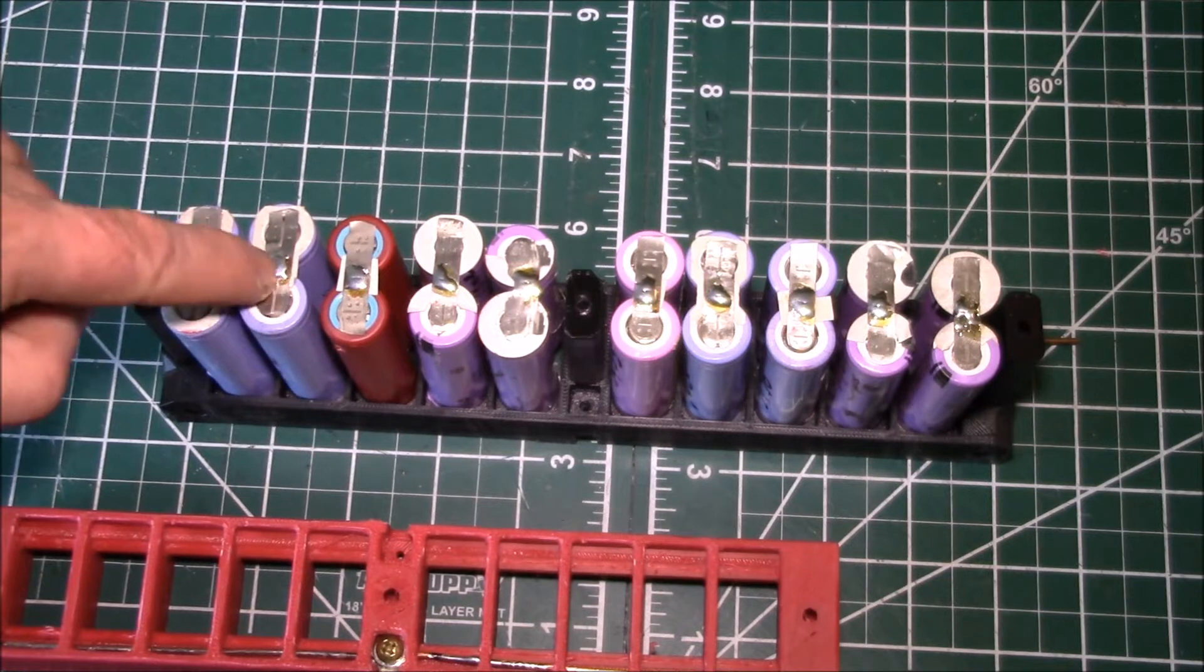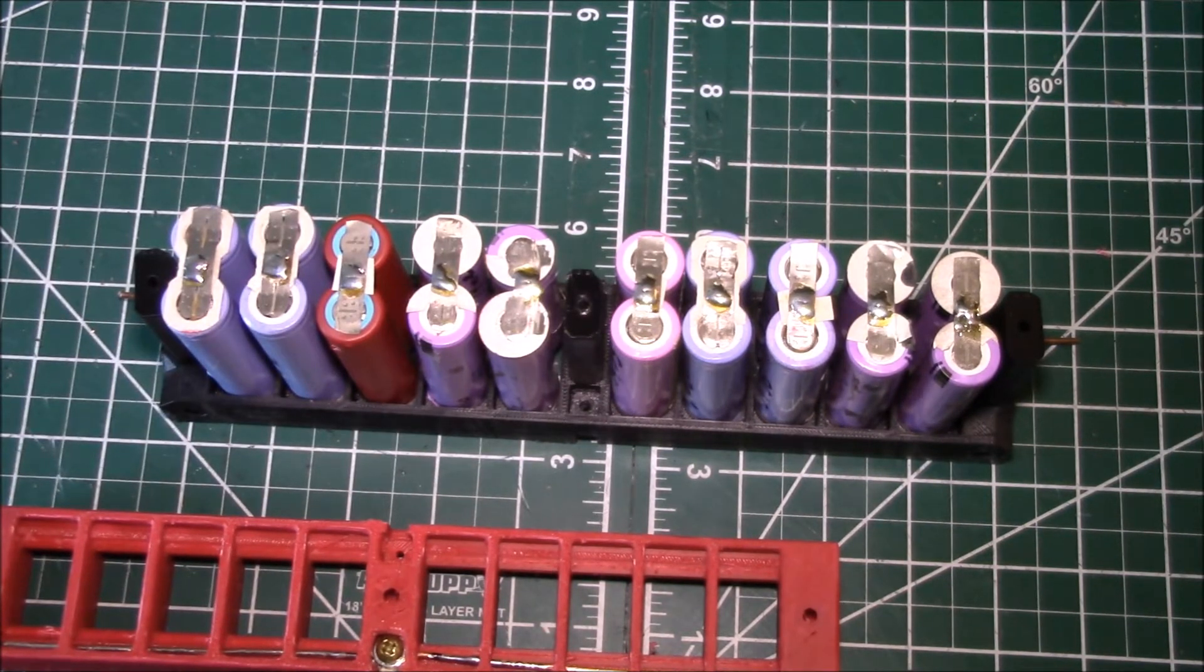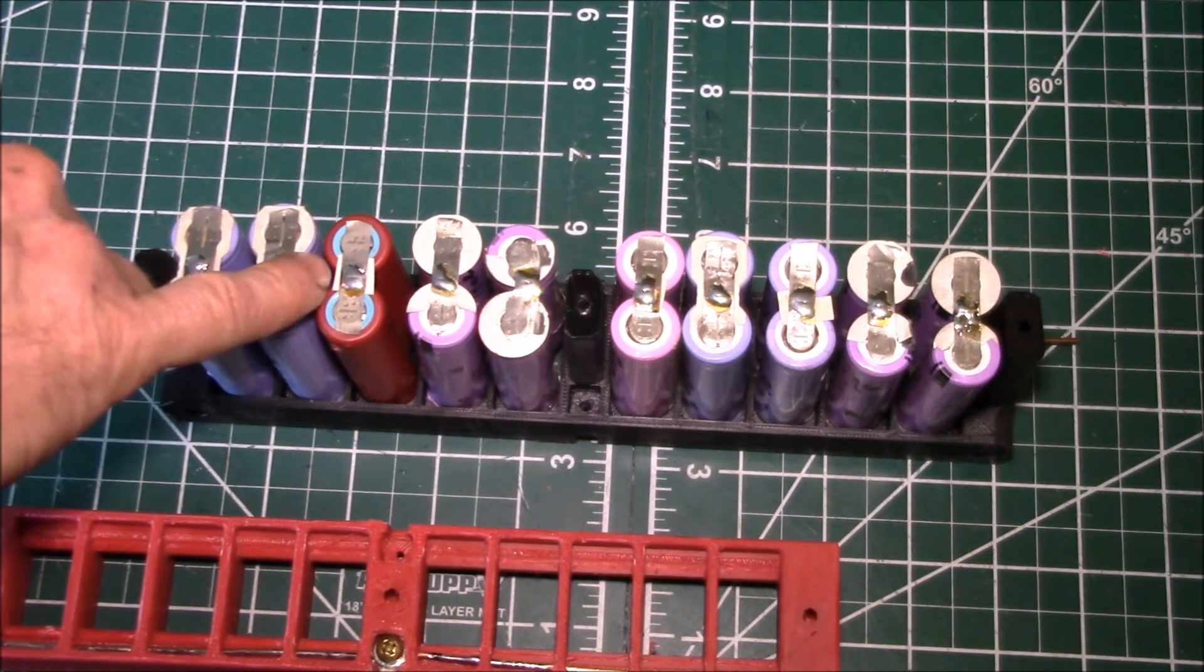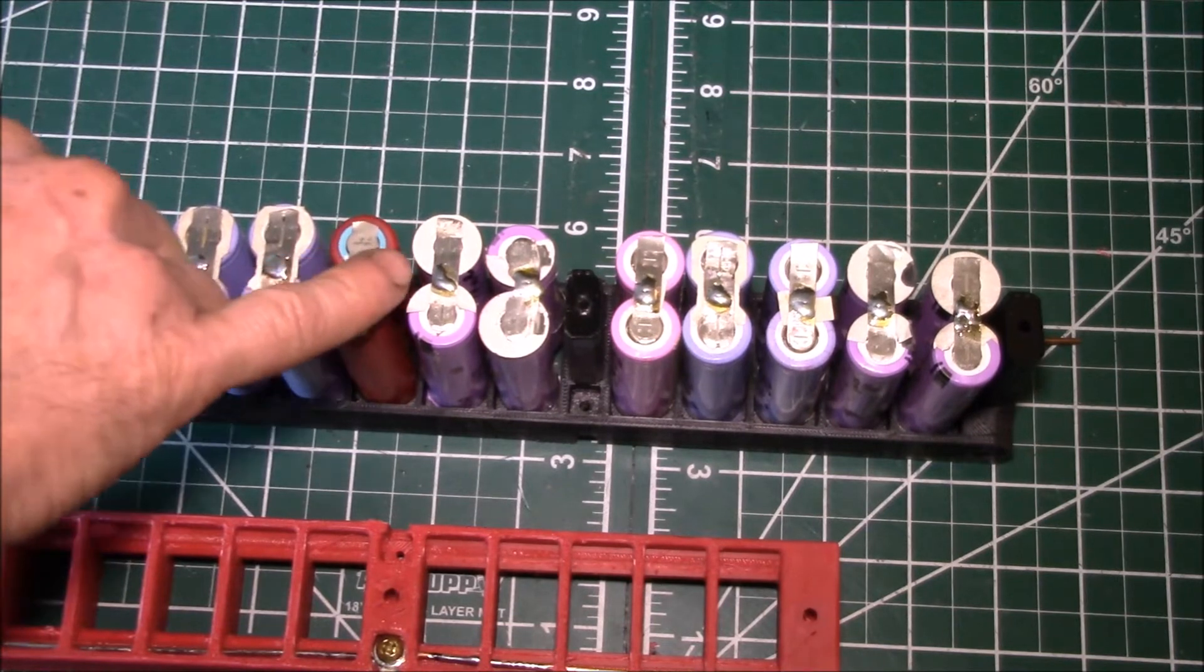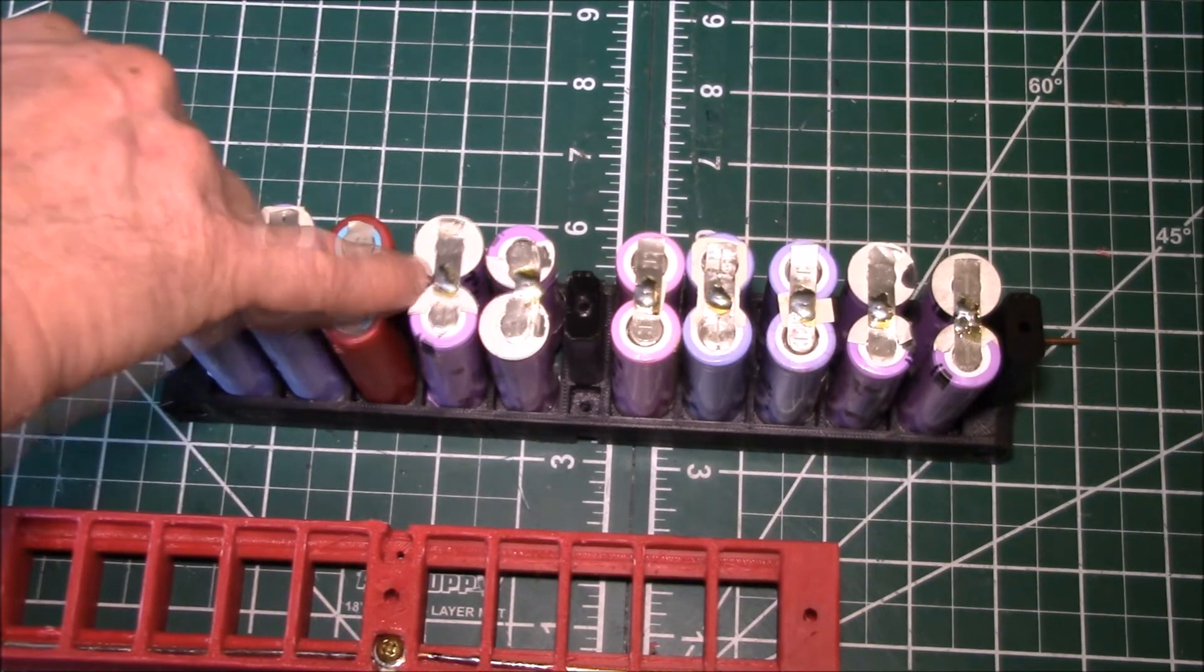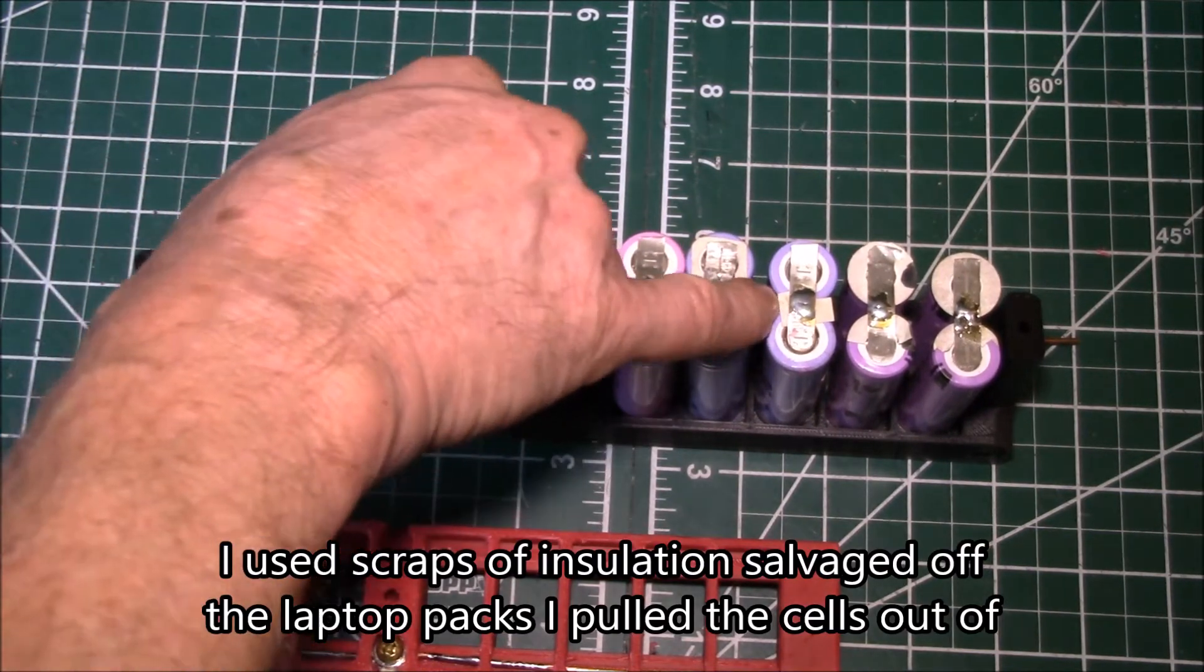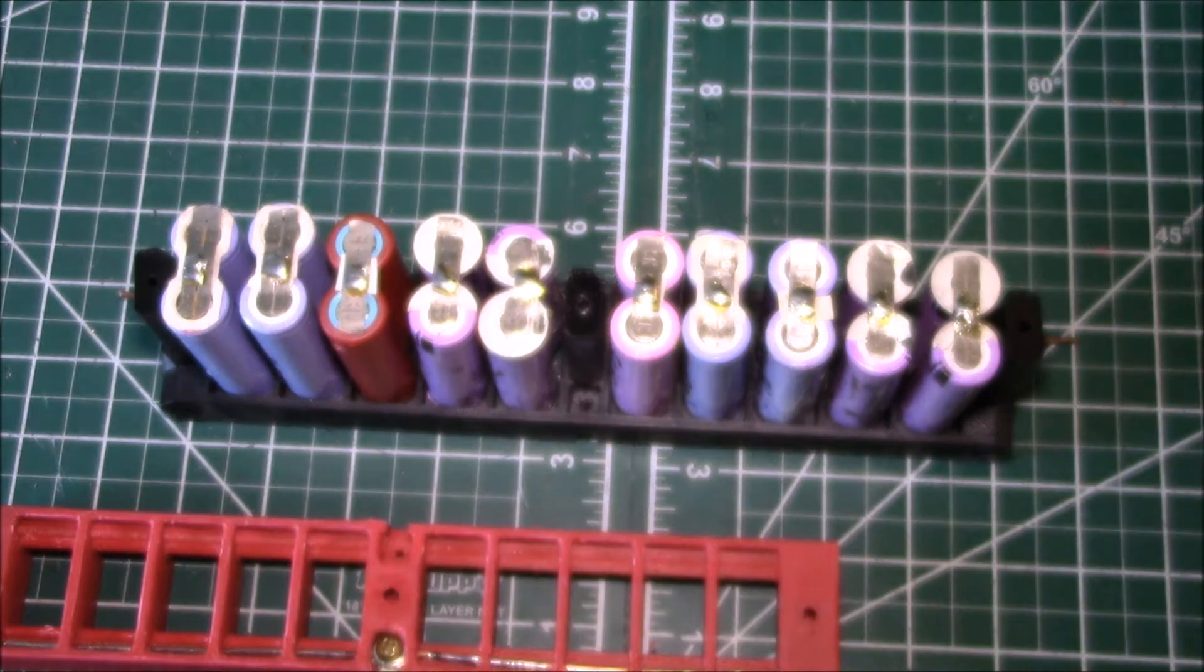Then what I do is check to make sure I've tinned all the tabbing. Before I do the tinning, I also make sure I've inserted insulation under the tabbing between the cells. Some of the cells have the factory insulation in place, but some of these here I've had to add, like that one there, this red one.